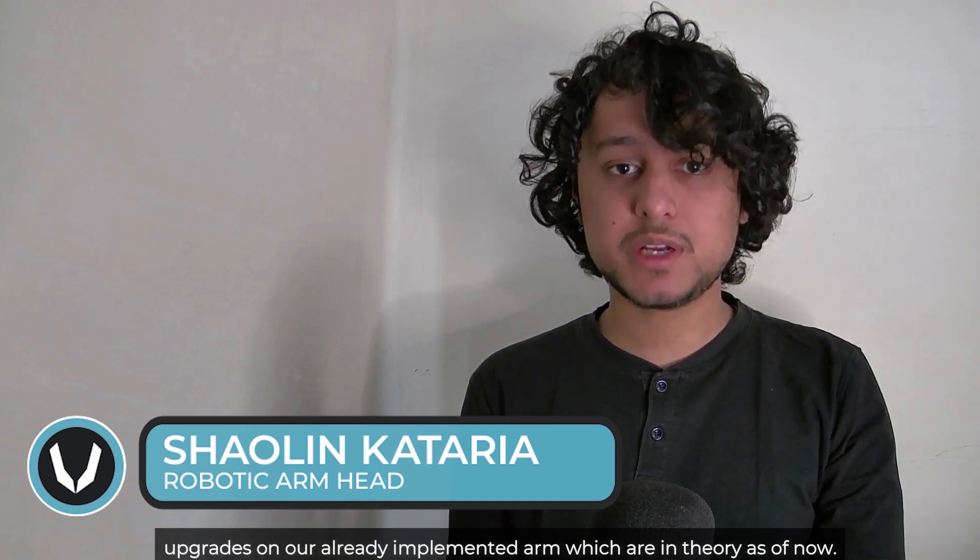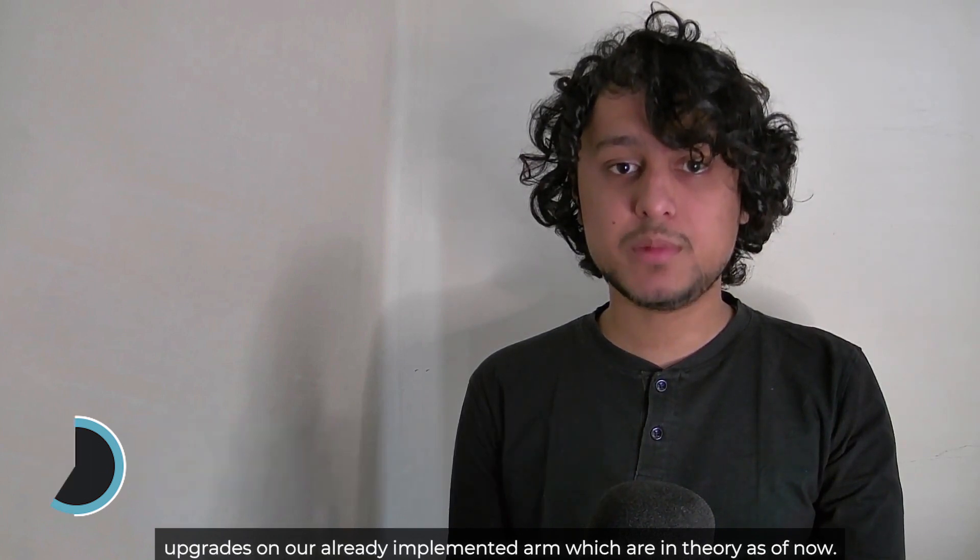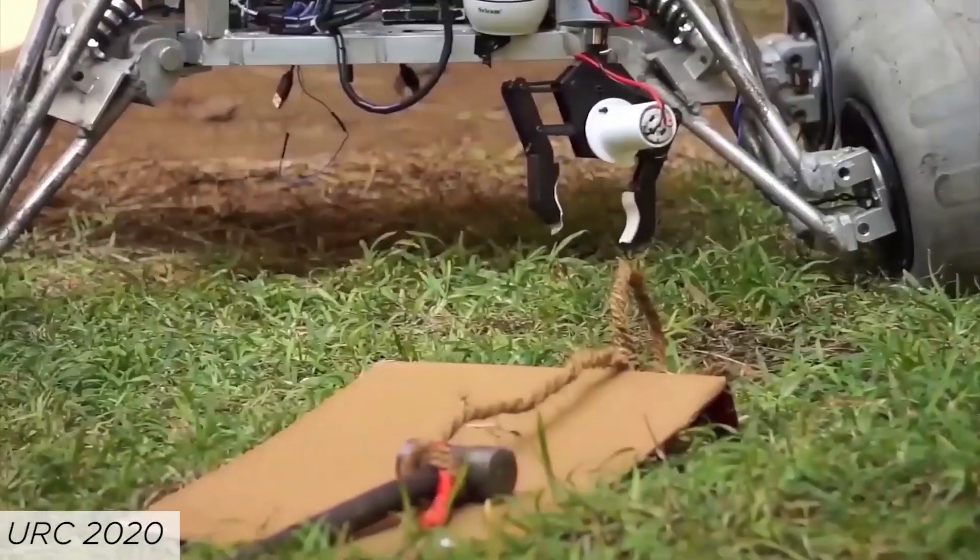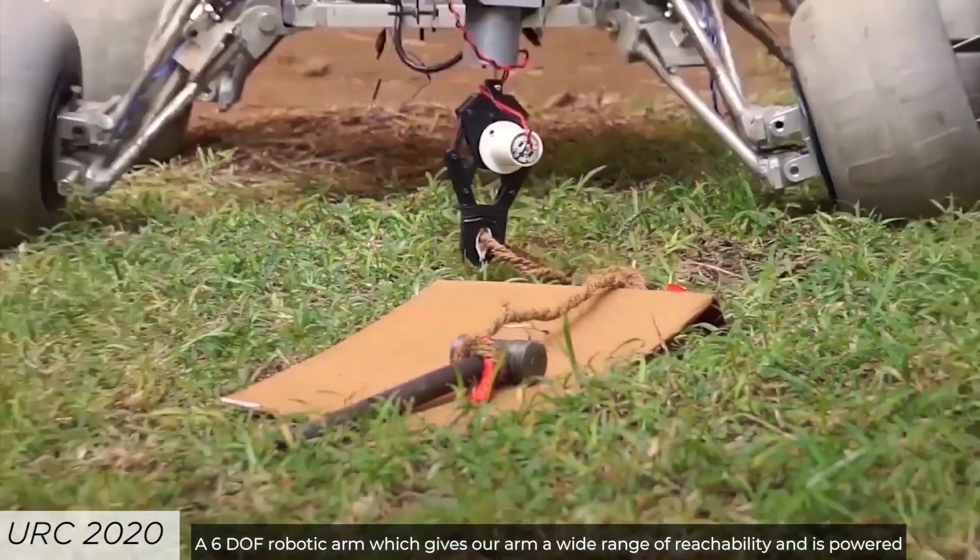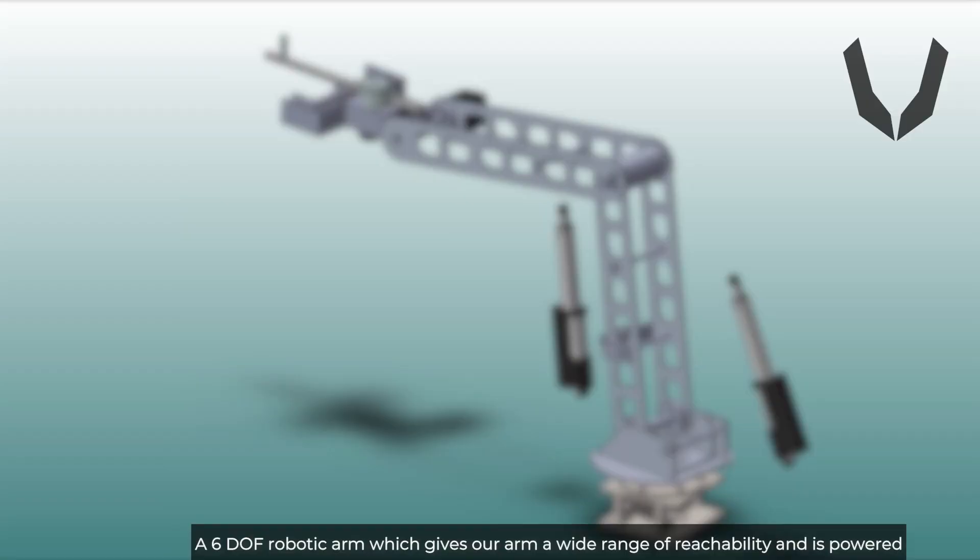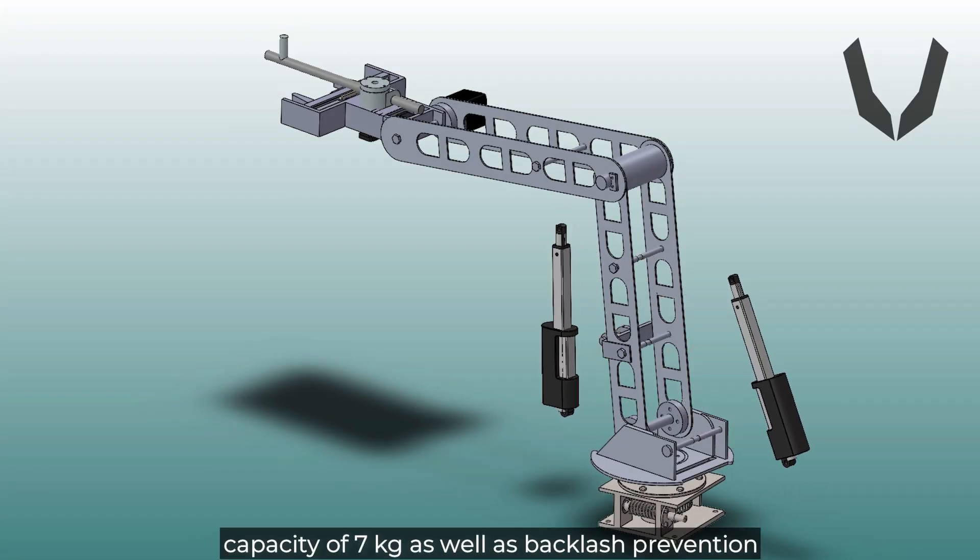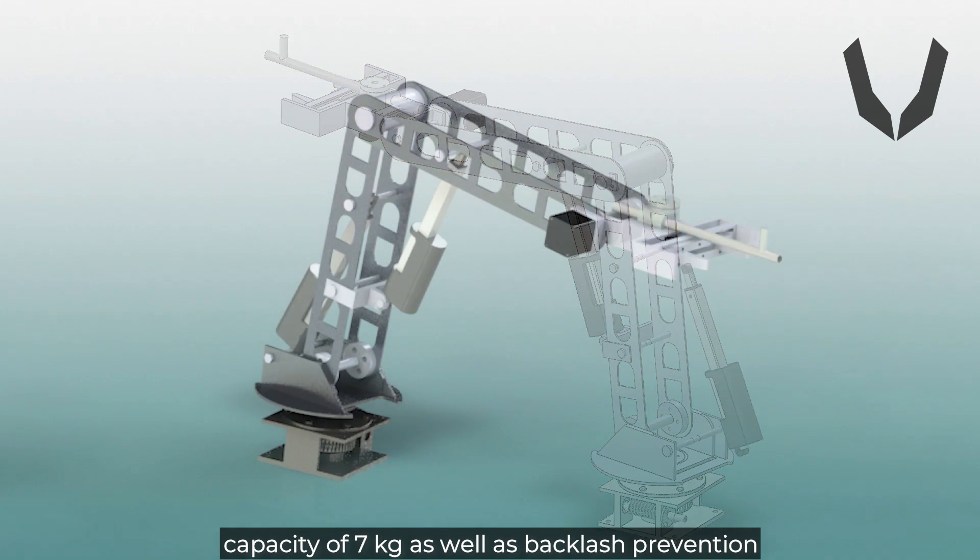Extensive testing in the URC 2020 phase has helped us come up with upgrades on the already implemented arm. A 6 degree of freedom robotic arm gives our arm a wide range of reachability and is powered by two linear actuators which provide a load-bearing capacity of 7 kg as well as backlash prevention.